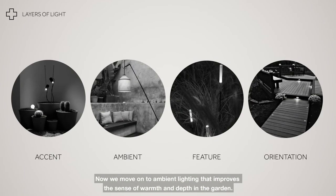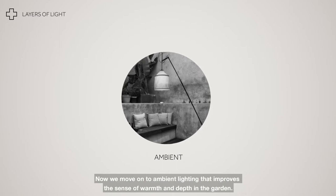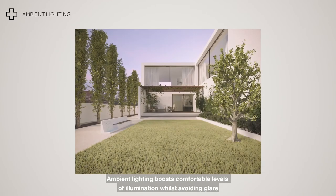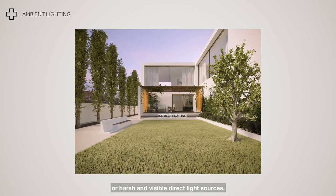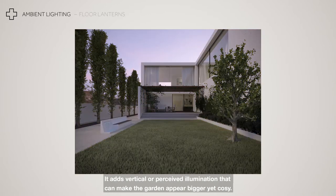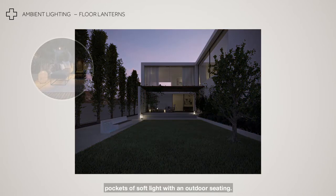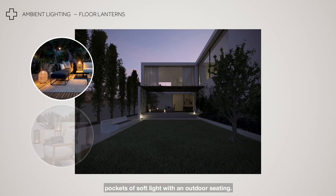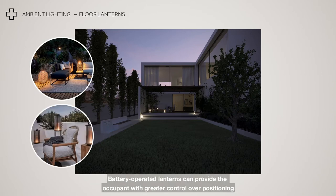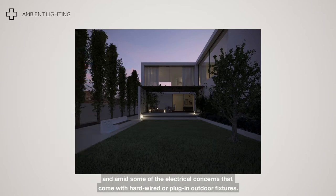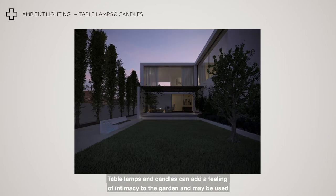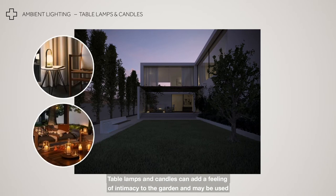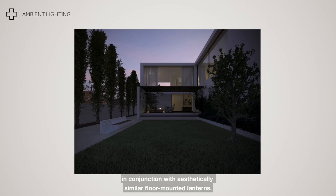Now we move on to ambient lighting that improves the sense of warmth and depth in the garden. Ambient lighting boosts comfortable levels of illumination whilst avoiding glare or harsh and visible direct light sources. It adds vertical or perceived illumination that can make the garden appear bigger yet cosy. Floor mounted lanterns are an excellent way to create pockets of soft light within outdoor seating. Battery operated lanterns can provide the occupant with greater control over positioning and omit some of the electrical concerns that come with hard-wired or plug-in outdoor fixtures.